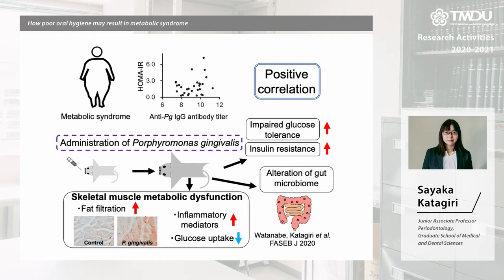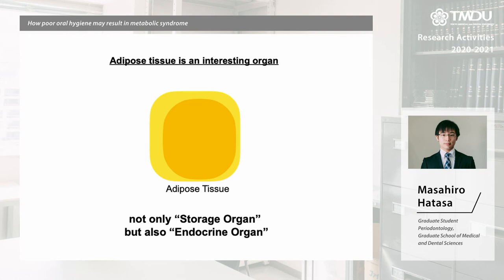These are striking results that provide a mechanism underlying the relationship between periodontal disease and the development of metabolic syndrome and type 2 diabetes. We also investigated the mechanism of the effect of periodontal disease on obesity.